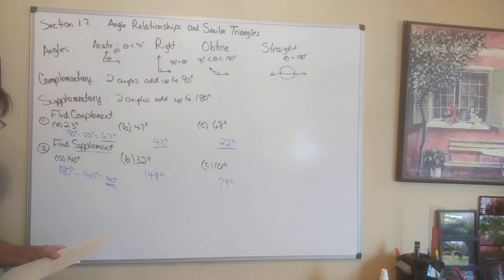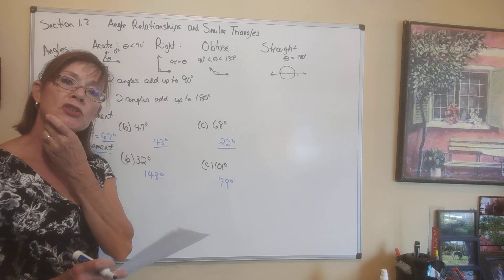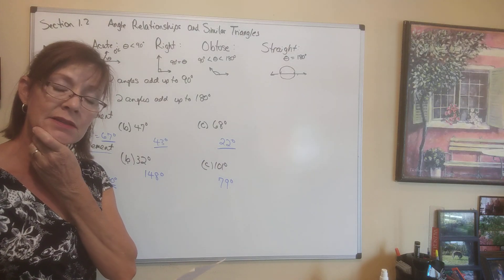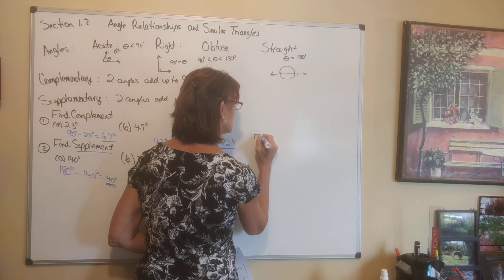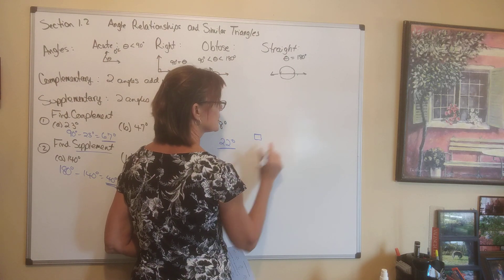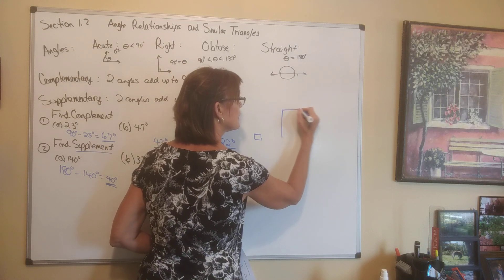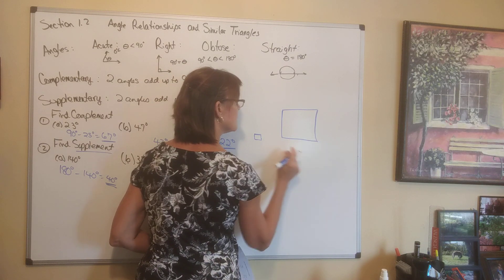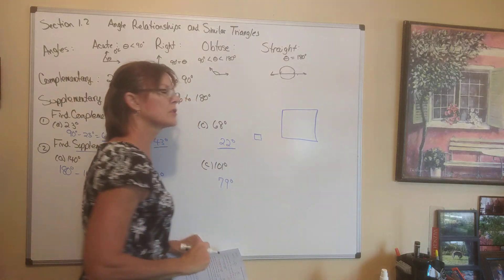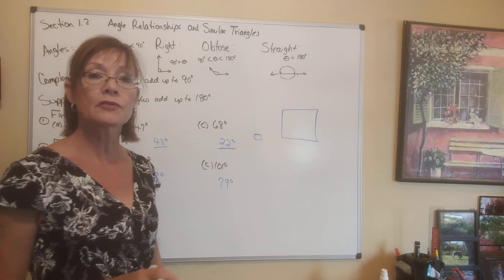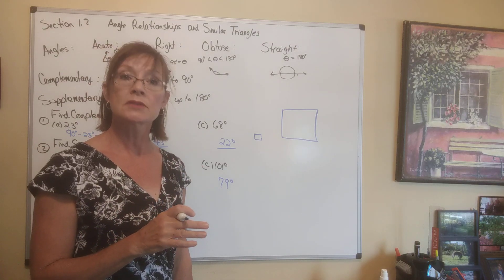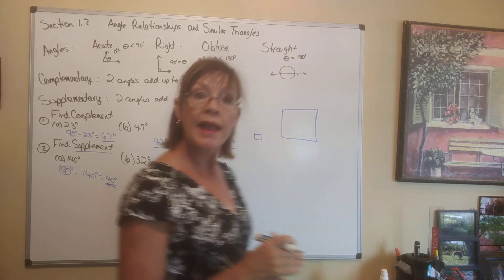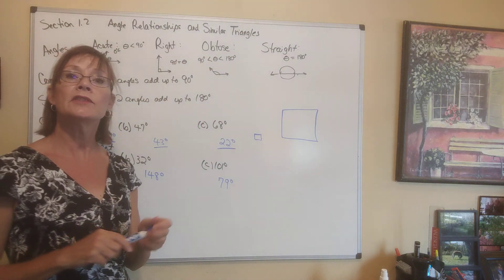Similar figures are figures that have the same shape but are different sizes. For example, you could have a square here and a square of a different size — these are the same shape, different sizes, so those are similar figures. They don't have to be regular figures; they could be irregular figures, but they have to be the same shape and different sizes.